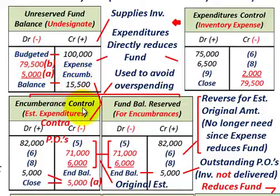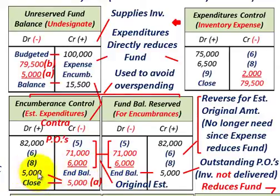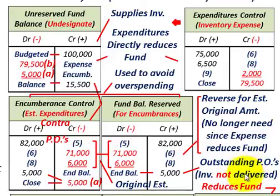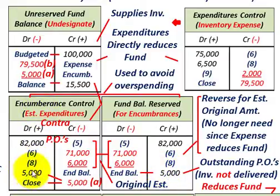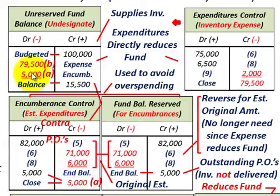The last thing to deal with is the encumbrances control account. Netting debits against credits, we have an ending balance of $5,000 in the encumbrances control account, and a corresponding $5,000 credit in the fund balance reserved for encumbrances. Those represent outstanding purchase orders for inventory not yet delivered — funds set aside for those outstanding POs. The closing entry is to credit encumbrances control for $5,000, with the associated debit to unreserved fund balance, undesignated, for $5,000.